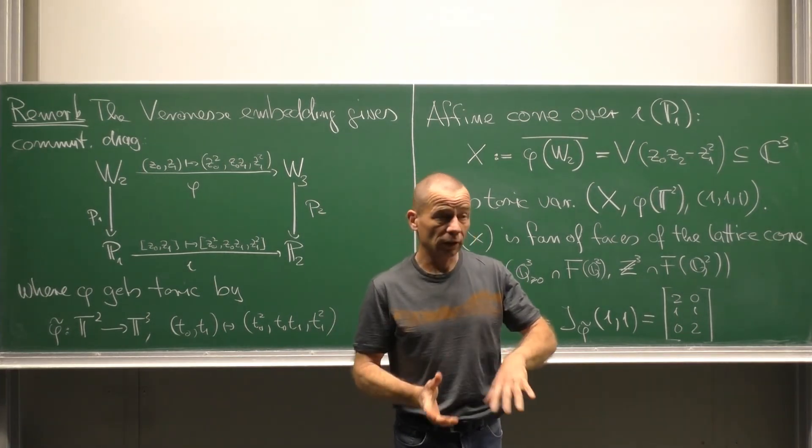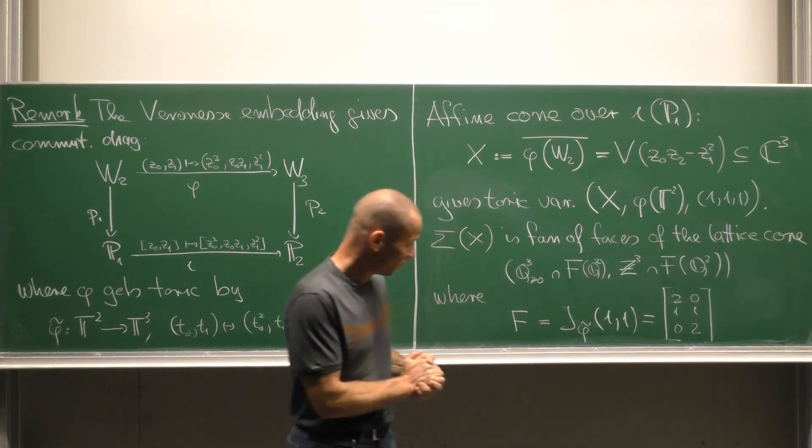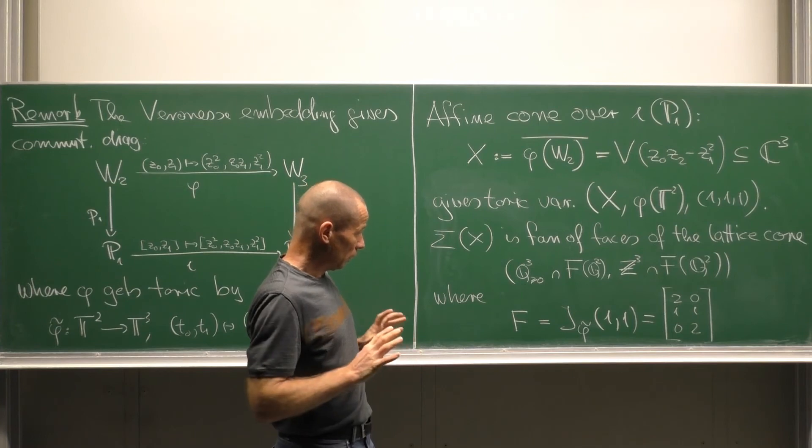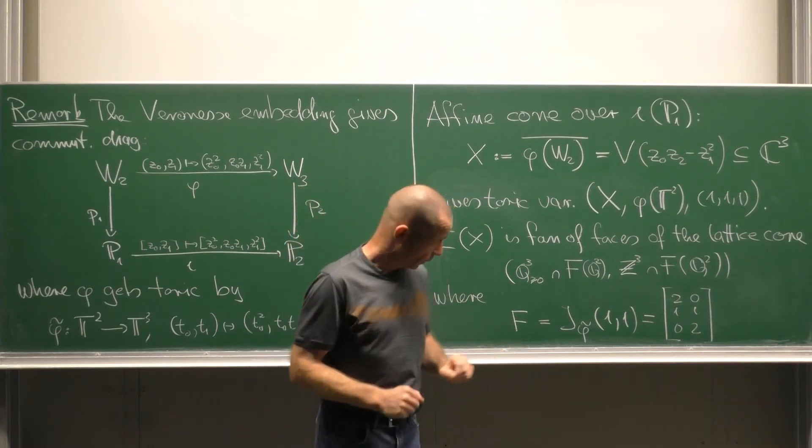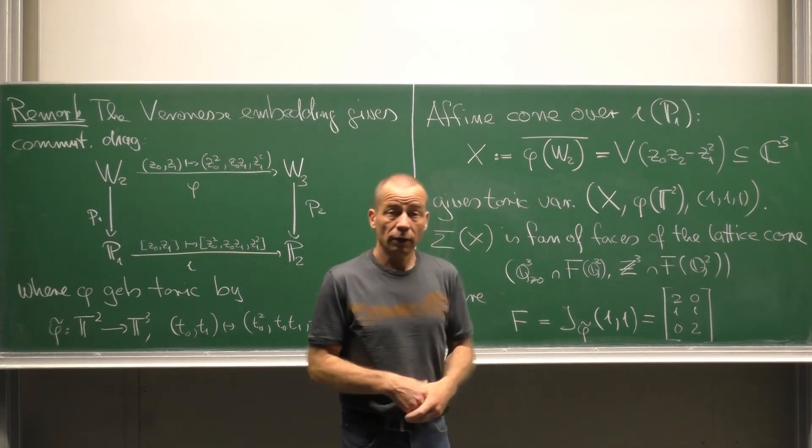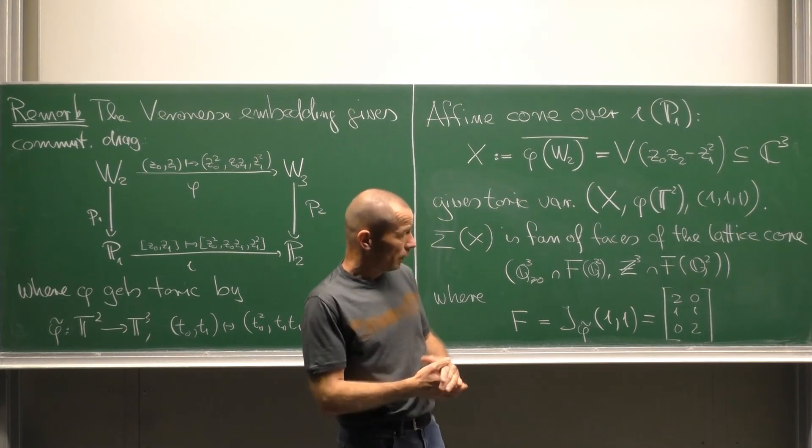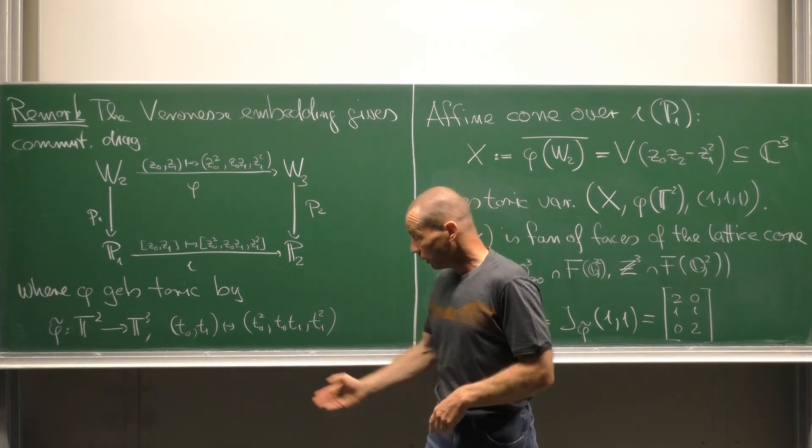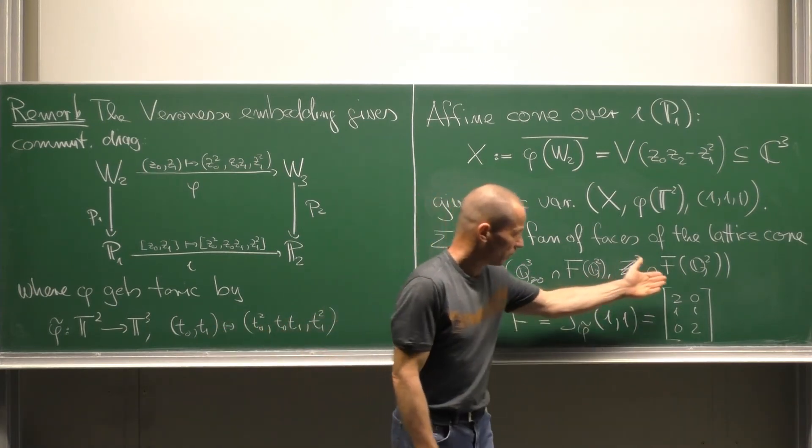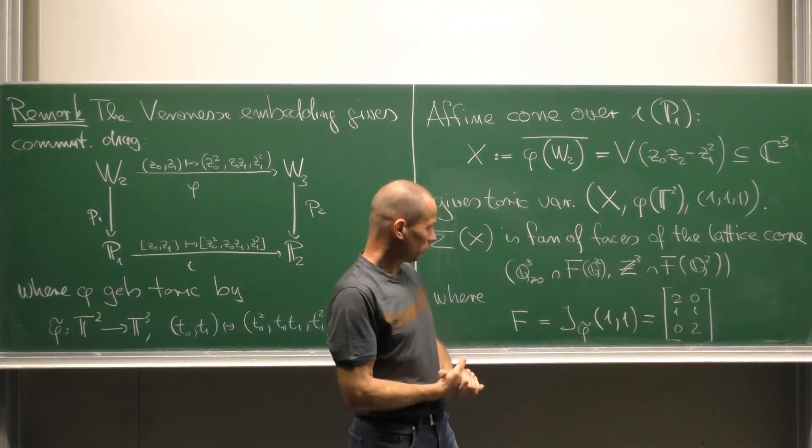And the associated fan can be determined entirely in the setting of fans. First we have to find the push-forward map. Now as in the earlier examples we have to take the Jacobian at the point (1,1,1). And that means differentiating this homomorphism and we end up with this Jacobian matrix.